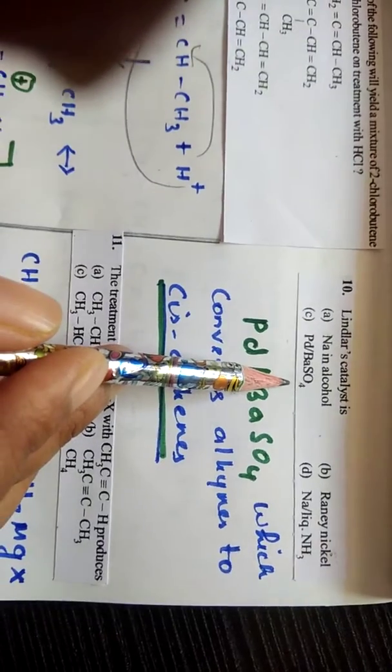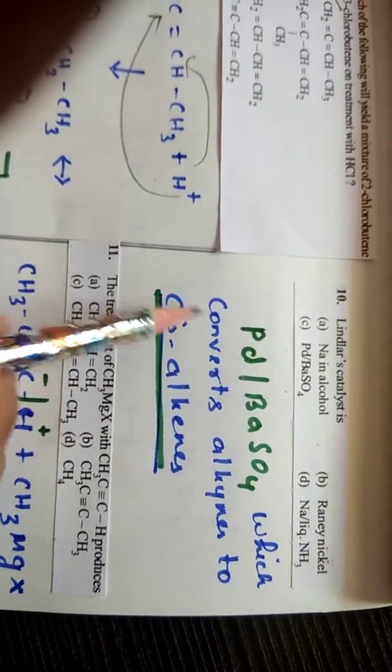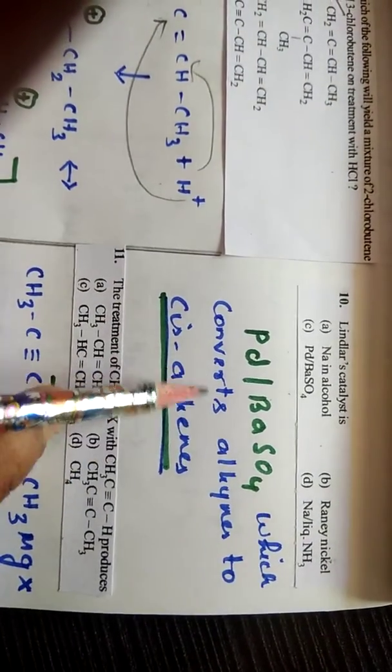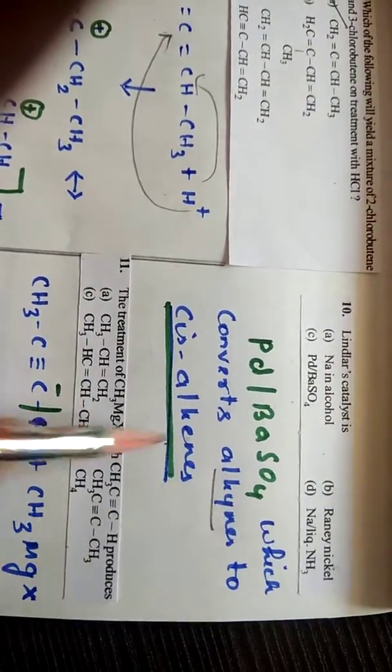10th question: Lindlar's catalyst, you know, palladium barium sulfate is a Lindlar's catalyst. Generally we have to use this catalyst to convert alkynes to cis-alkenes in hydrogenation. 11th question.